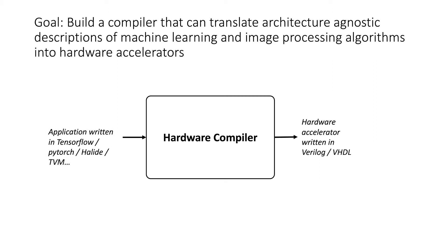The goal in projects like this is to build a compiler that can translate architecture-agnostic descriptions of machine learning and image processing algorithms into hardware accelerators. The input to the compiler is an application written in TensorFlow, PyTorch, Halide, or TBM — your favorite framework for expressing dense linear algebra — and the hardware compiler emits a hardware accelerator written in Verilog or VHDL that can be mapped to an FPGA or fabricated into an ASIC.